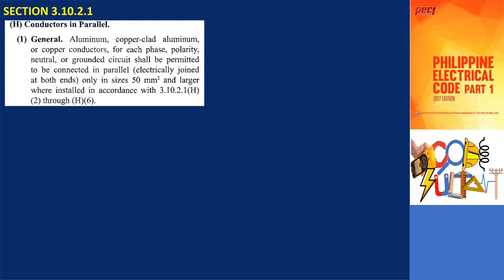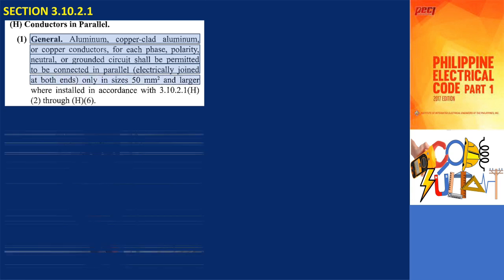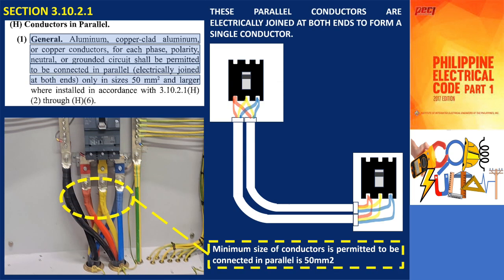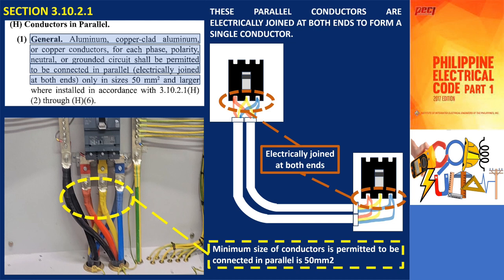Section 3.10.2.1h provides specific information and requirements for the paralleling of conductors and should certainly be the first reference that every electrical practitioner would choose for an understanding of the basics of paralleling conductors. This subsection permits aluminum, copper-clad aluminum, and copper conductors that are at least 50 square millimeters or larger to be connected in parallel, if these parallel conductors are electrically joined at both ends to form a single conductor.